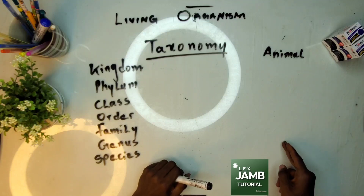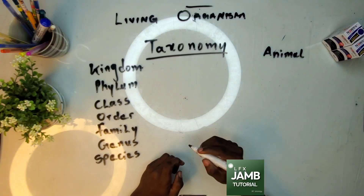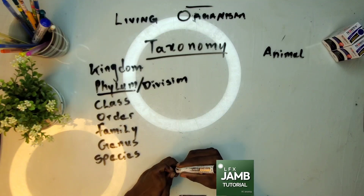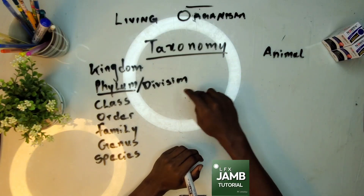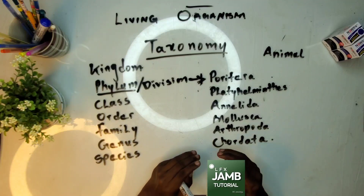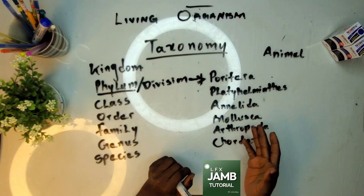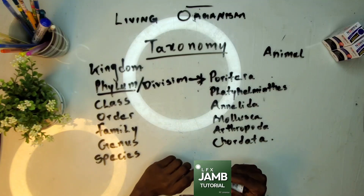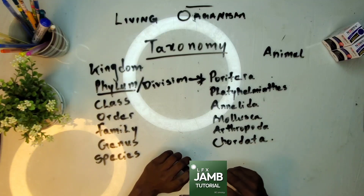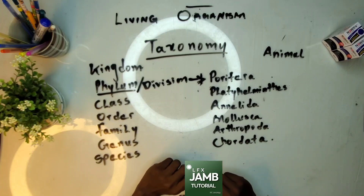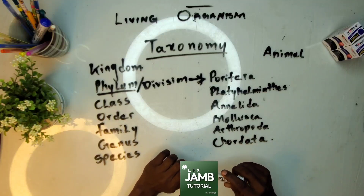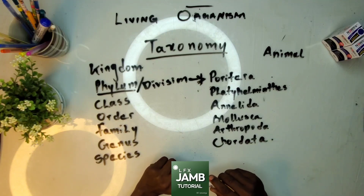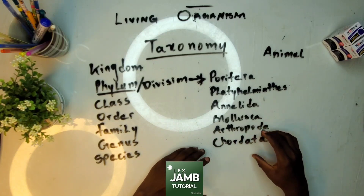Since we are considering animals, we go to Phylum. Had it been we were considering plants, it would be called Division, but since we are considering animals, we go to Phylum. Here are some of the phyla under Kingdom Animalia: we have Porifera, Platyhelminthes, Annelida, Mollusca, Arthropoda, and Chordata, among others. For example, Porifera includes sponges; Platyhelminthes includes flatworms; Annelida includes worms; Mollusca includes snails; Arthropoda includes insects.